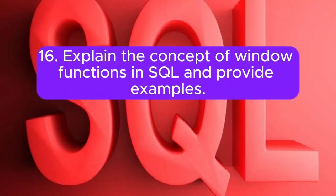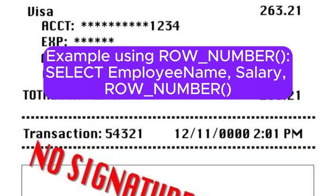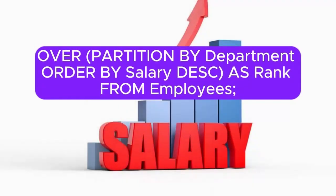Question 16: Explain the concept of window functions in SQL, and provide examples. Answer: Window functions operate on a specified range of rows related to the current row. Example using row_number: SELECT employee_name, salary, row_number() over (partition by department order by salary desc) as rank from employees.